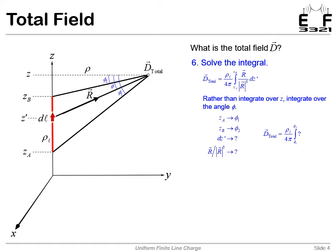So let's integrate, instead of from ZA to ZB, we'll integrate from phi1 to phi2. So our observation point's up here. And we can draw a projection to the Z axis. So, of course, this projection will be at height Z, our observation point.